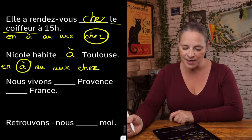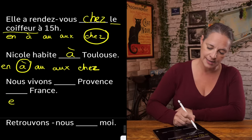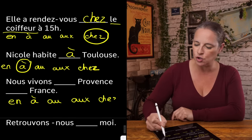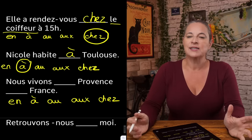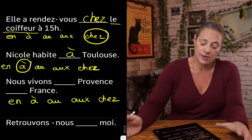'Nous vivons ___ Provence, ___ France.' Provence is a region in France, so knowing that it is a region, it is going to be 'en': 'nous vivons en Provence.' It's not a town — it's a provincial region in the south of France. France is a country, so it is also going to be 'en' — not 'chez,' not 'à,' not 'au.' So: 'nous vivons en Provence, en France.'